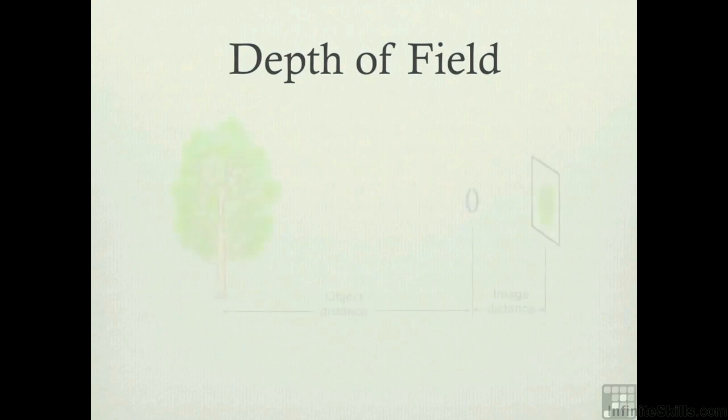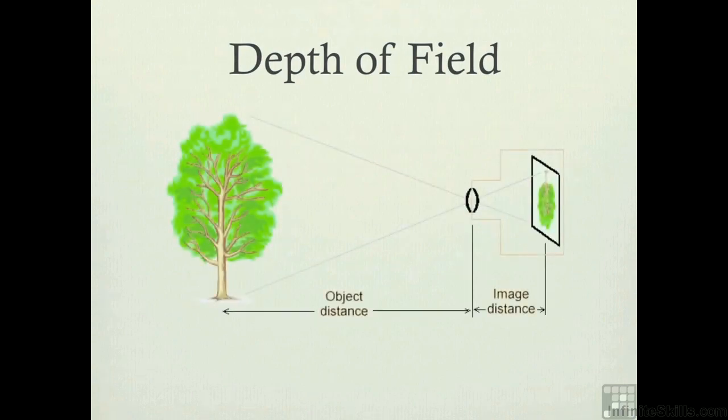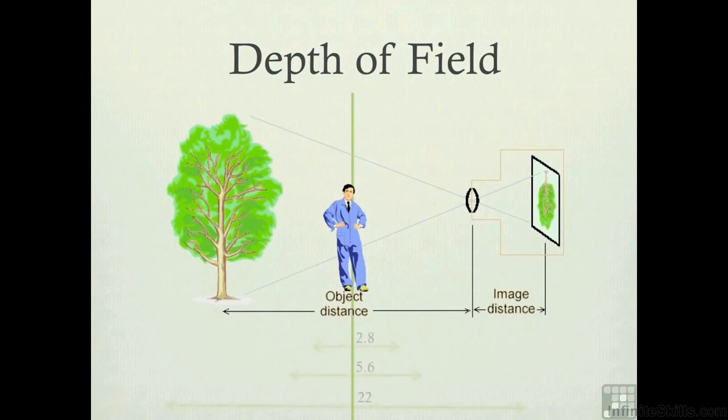Again, let's look at our tree. Let's say we're focusing right where that vertical line is. I know that's in front of the tree. Tell you what, let's put somebody there. All right, we're taking a photograph of the dude right there. Now, depending on your f-stop, we focused on him.